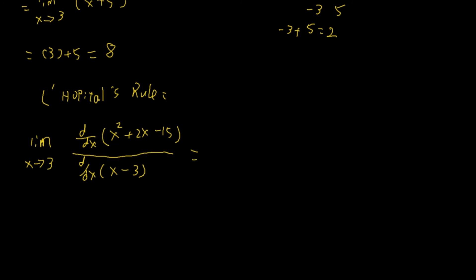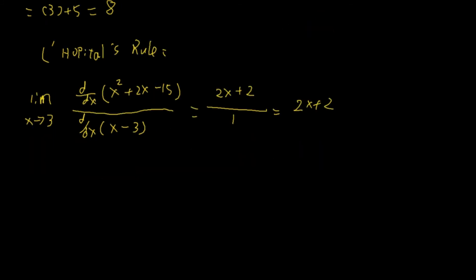What is the derivative of the numerator? Derivative of x squared is 2x. Derivative of 2x is 2. Bottom, derivative of x is just 1. Derivative of a constant is 0. We have 2x plus 2. Basically, let me rewrite this. Limit as x approaches 3, 2x plus 2.